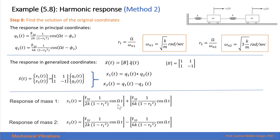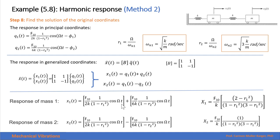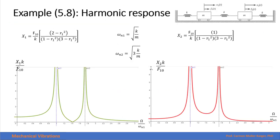Now that we have the response in principal coordinates, we find the response in generalized coordinates x1 and x2 by going back to our change-of-variable equation and multiplying the principal coordinate response by the modal matrix. The response of the first mass is a combination of the two modes, and likewise for the second mass. Expressing everything in terms of the first frequency ratio — where the second frequency ratio becomes √3 — we get the same solution as when we solved using generalized coordinates.